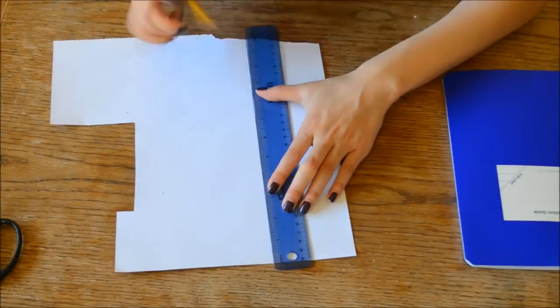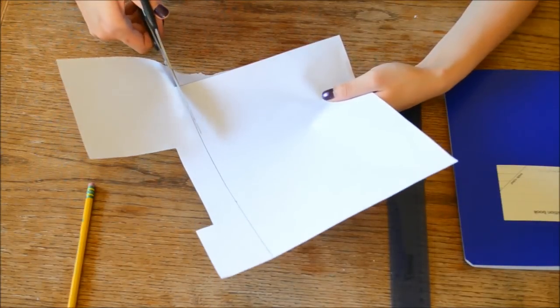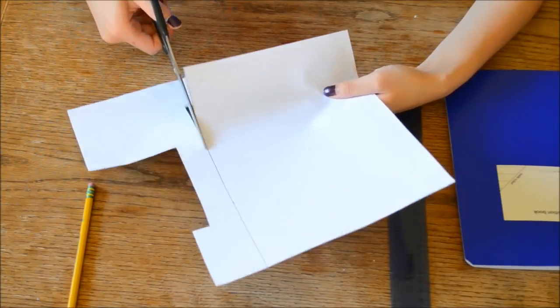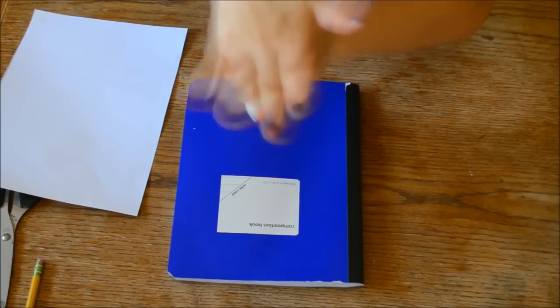And the paper I'm using is just some scrapbook paper. I like it because it's kind of hard and I'm just using the back of it which is white. And after you have cut out your paper, just glue it. And I'm just using the Elmer's glue because it's cheap.